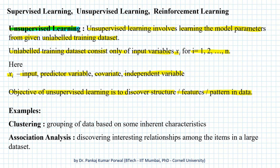Some examples of unsupervised learning are clustering, where we group the given data based on some inherent characteristics. This sounds similar to classification, but because class labels are not part of our training data set, the grouping done based on inherent characteristics is called clustering. Next is association analysis, where our objective is to discover interesting relationships among items in a large data set.